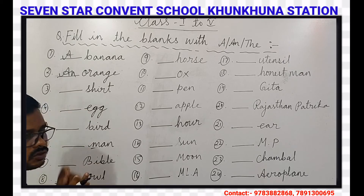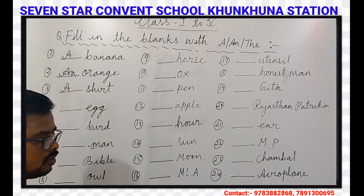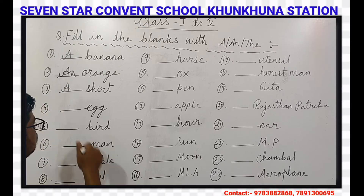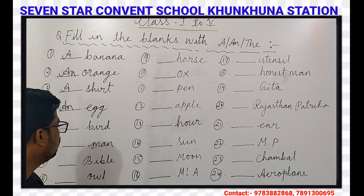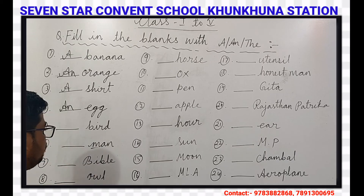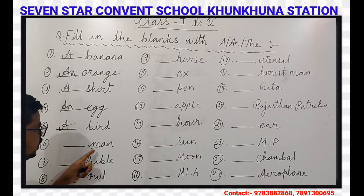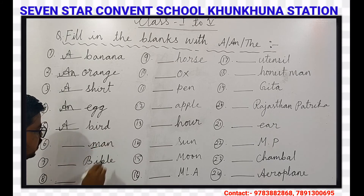Our next question is search. The first letter S is a consonant, so A will come here. Our next question is egg. The first letter is E, and E is a vowel, so AN will come here. Our next question is bird. Bird's first letter B is a consonant, so A will come here.